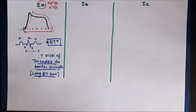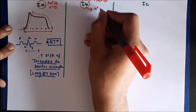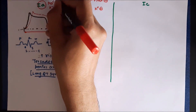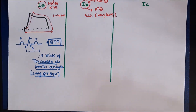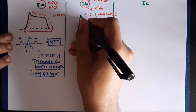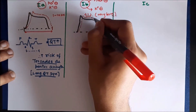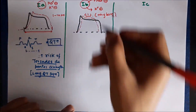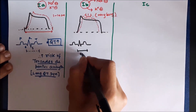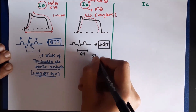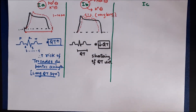Class 1b drugs also block sodium channels but open potassium channels. Compared to Class 1a, Class 1b drugs block sodium channels for a very brief duration — less than one second. On the ventricular action potential there will be a minute delay in depolarization due to sodium channel blockade, but there will be early repolarization due to opening of potassium channels. Therefore, the QT interval is going to decrease — Class 1b drugs lead to shortening of the QT interval on the ECG.